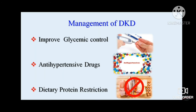Regarding oral hypoglycemic agents in DKD: metformin is the first-line drug and can be safely used when serum creatinine is less than 1.5 mg/dL. According to recent ADA and kidney foundation guidelines, metformin is safe if creatinine is below 1.5 mg/dL. If GFR is above 60 it can be used safely; for GFR 30–44 we use half dose and add another OHA; for GFR 44–59 same dose is used.